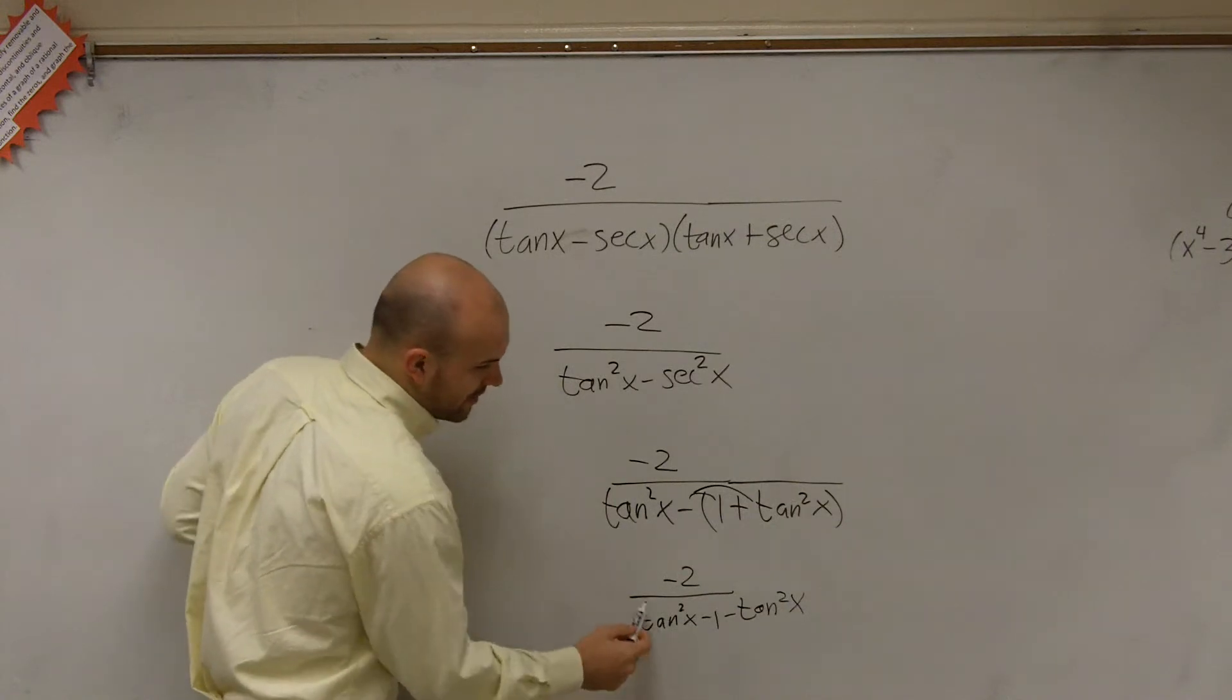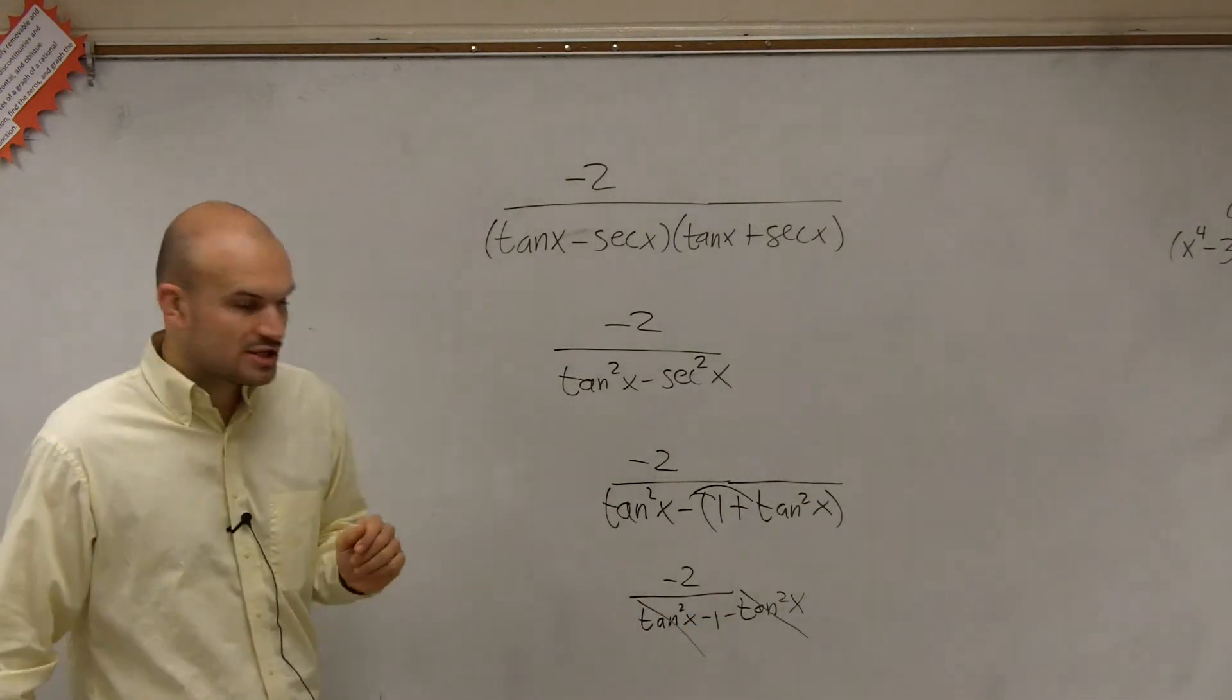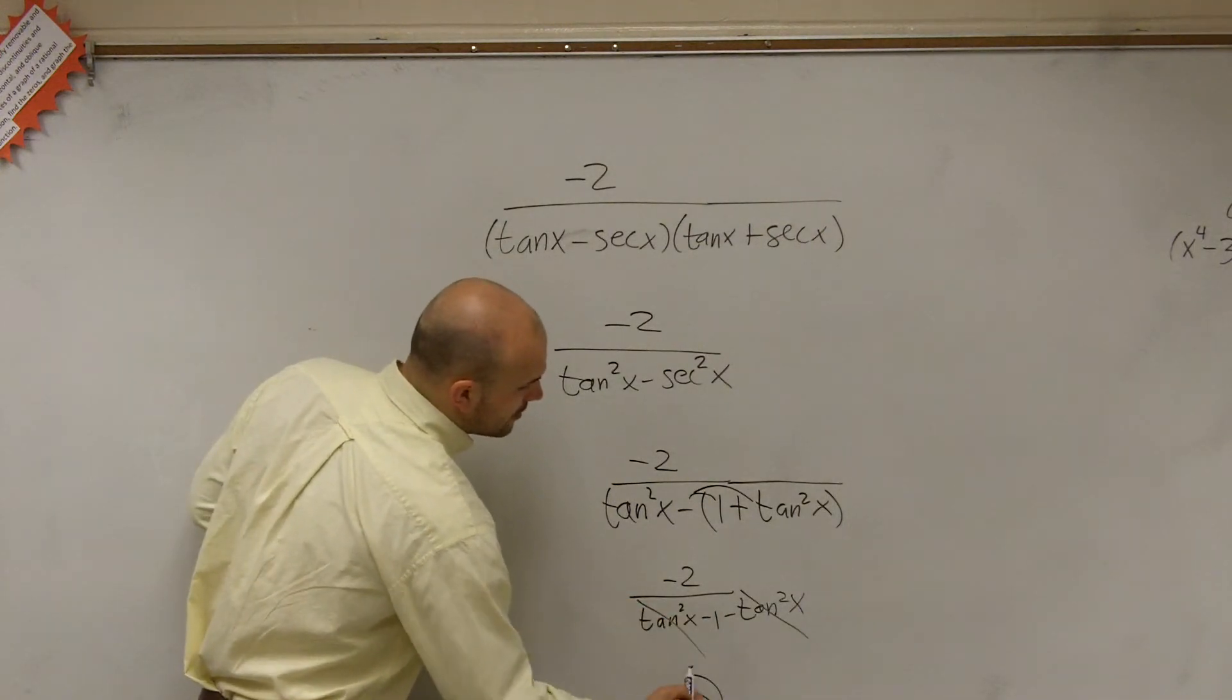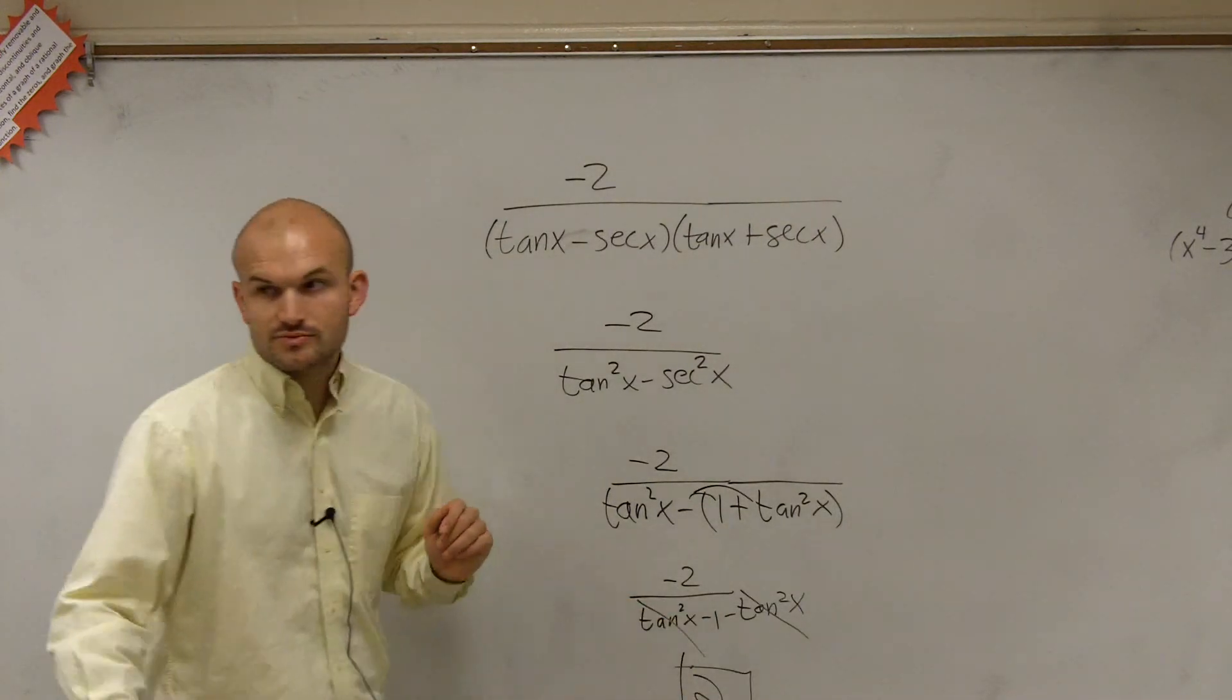Where you now, the tangents are going to subtract from each other to give you 0. And you have negative 2 divided by negative 1, which leaves you just with 2.